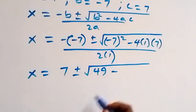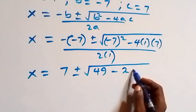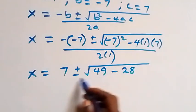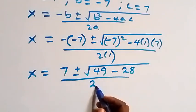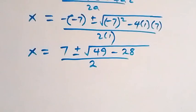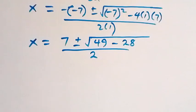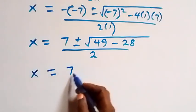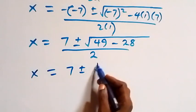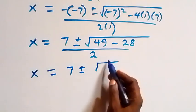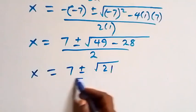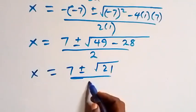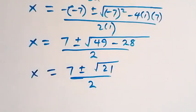Minus four times one times seven gives 28, over two. So we have x equals seven plus or minus square root of 49 minus 28, which is square root of 21, over two.